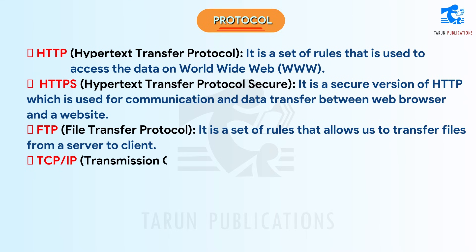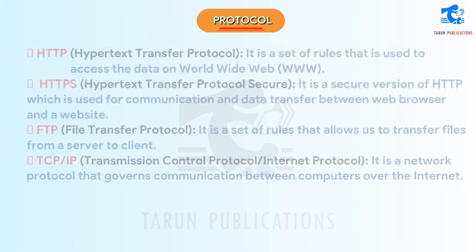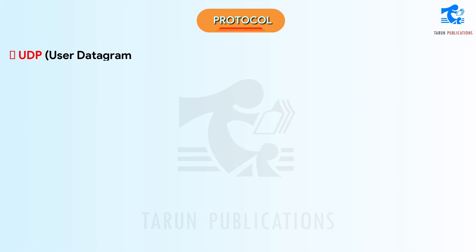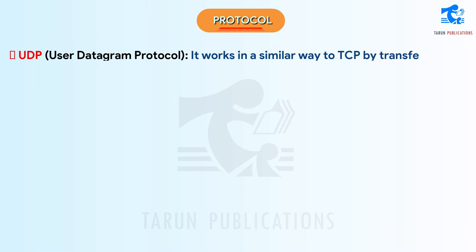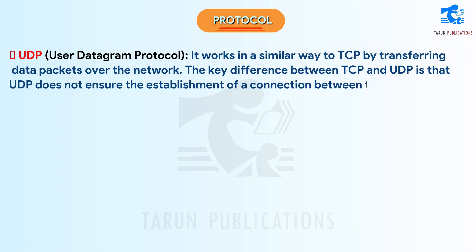TCP/IP is a network protocol that governs communication between computers over the internet. UDP (User Datagram Protocol) works in a similar way to TCP by transferring data packets over the network. The key difference is that UDP does not ensure the establishment of a connection between the application and server.